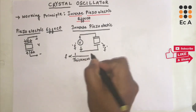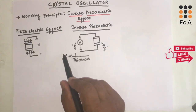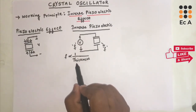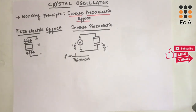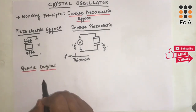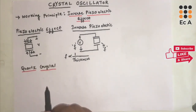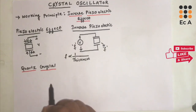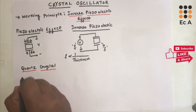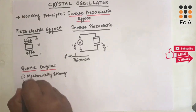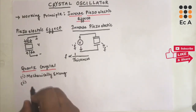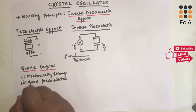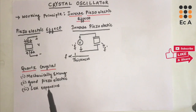The frequency of oscillation is inversely proportional to the thickness of the crystal, meaning frequency of oscillation will increase as the thickness of the crystal decreases. Usually in crystal oscillators, quartz crystal is used. Quartz crystal is used in sinusoidal oscillators because it is mechanically strong, has good piezoelectric sensitivity, and is also less expensive.